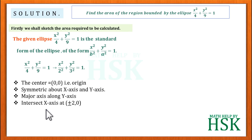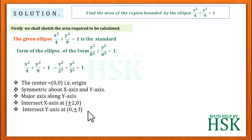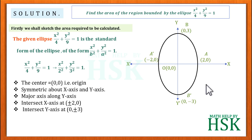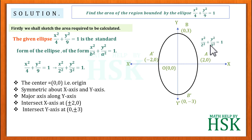The ellipse intersects the x-axis at (±2, 0) and the y-axis at (0, ±3). Drawing the coordinate axis and marking these points — A and A' at (±2, 0), and B and B' at (0, ±3) — we get the ellipse x²/2² + y²/3² = 1, with the major axis along the y-axis and the minor axis along the x-axis.